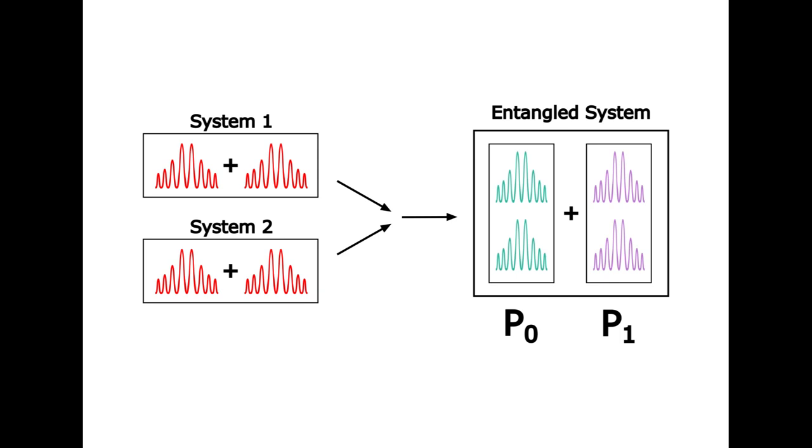So after the measurement, there is no coherence at all in the subsystems. This rules out the possibility of any interference within the subsystems.